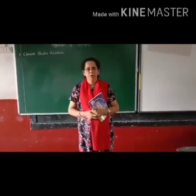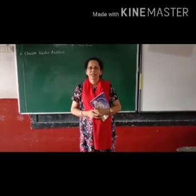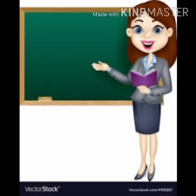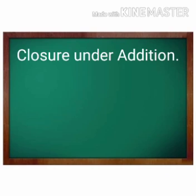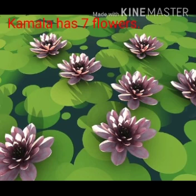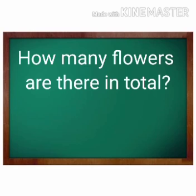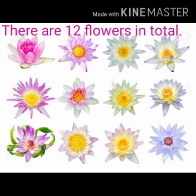Today we are going to learn properties of integers. What do you get when we add two integers? Let us see. Closure under addition. Kamala has seven flowers and Vimala has five flowers.